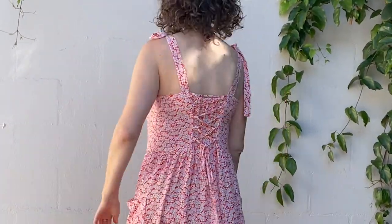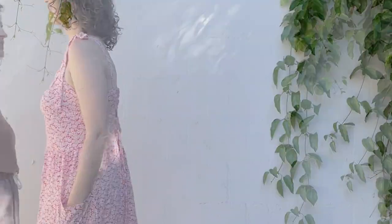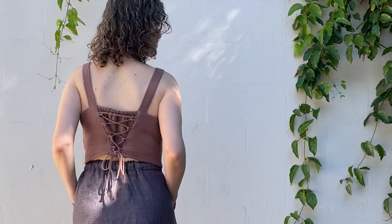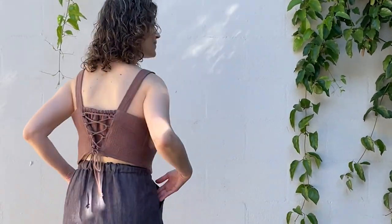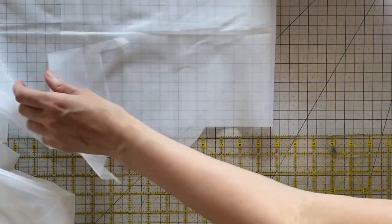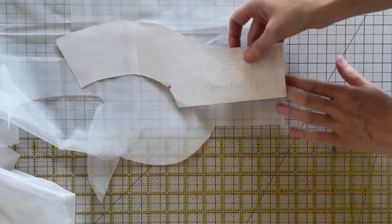You can also use a lightweight linen, chambray, cotton lawn, or poplin. For my View A sample, I even used a double gauze, which I really liked. In addition to fabric, you'll need thread and interfacing to sew this garment. I recommend a lightweight interfacing to match your fabric.